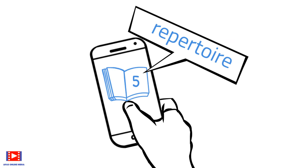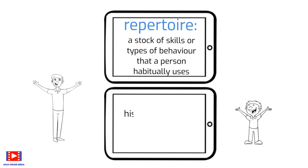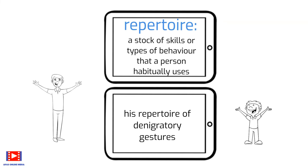Repertoire. Meaning: a stock of skills or types of behavior that a person habitually uses. Example: his repertoire of denigratory gestures.